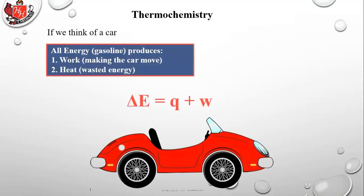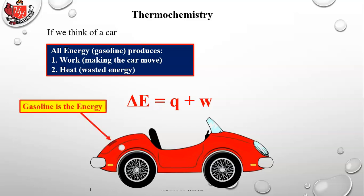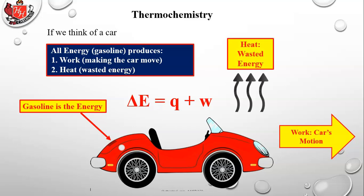Think of a car: the gasoline is the energy. It produces either work, which makes the car move, or it comes out as wasted heat energy. Most gasoline burned in a car is actually wasted as heat rather than making the car move — engines are not very efficient. That's a nice representation of what delta E = q + w means.